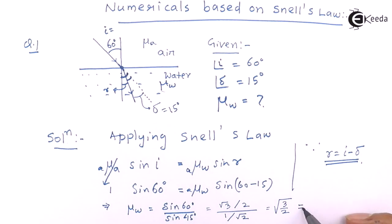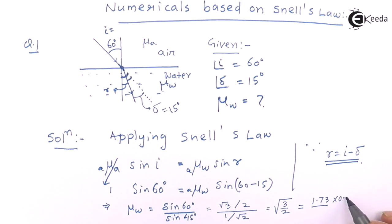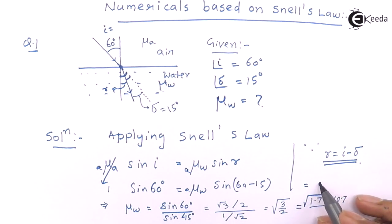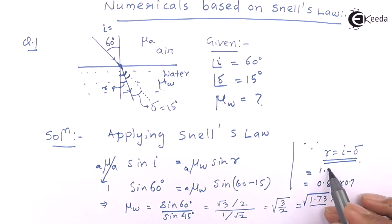So if you solve it, root 3 is 1.73 and this is root 2. If I take it up, it is 0.7. So it will be nearly 1.224. And we will have to take the root, obviously. This counts out to be 0.86 and 0.7, which counts out to be 1.224. This is the answer to this question.